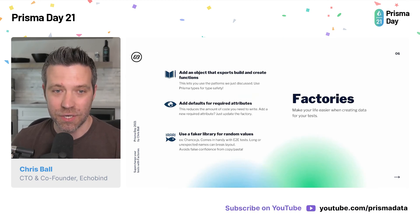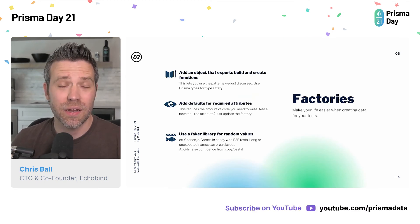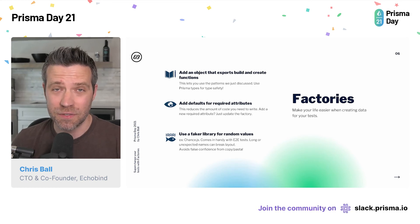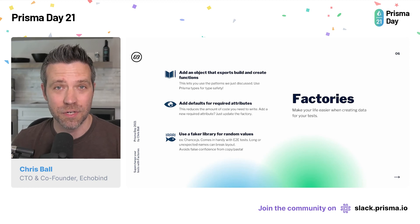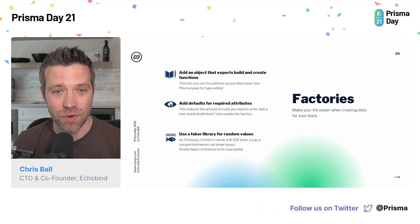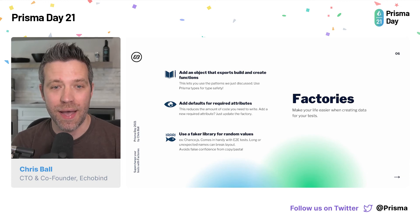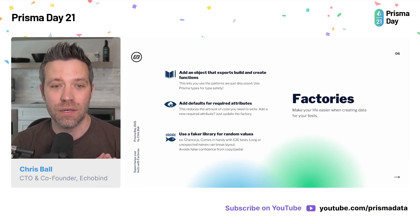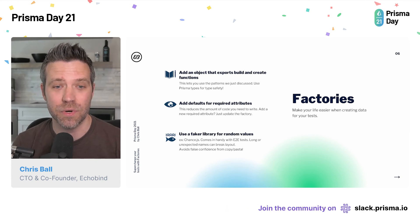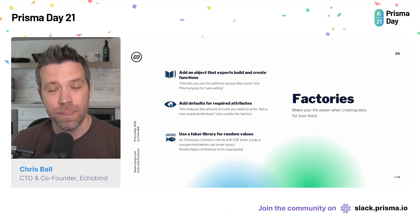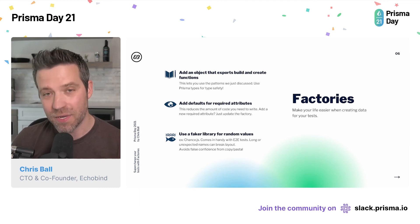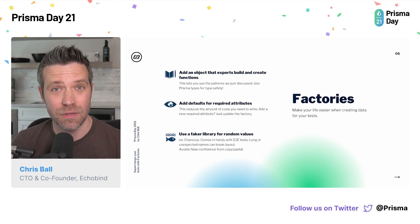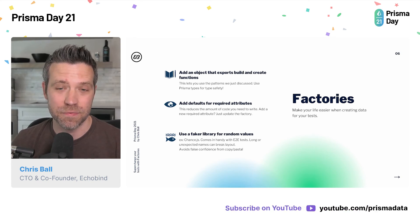Factories in a nutshell — as it relates to testing — are creating an object that exports a build and create function. It's going to use those to build everything for you, adding defaults for required attributes, and ideally using a faker library like Chance to help with generating random values. Next, I want to talk about end-to-end tests and how you can use the same pattern there. This is where the faker library stuff is really helpful, in my opinion.